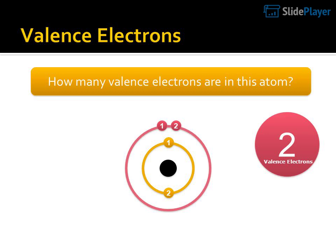How many valence electrons are in this atom? Electron configuration: 2, 1, 2. Valence electrons? 1.